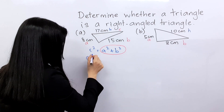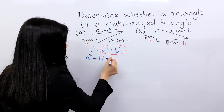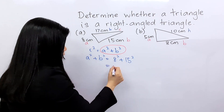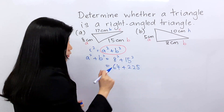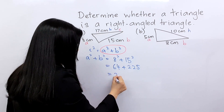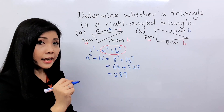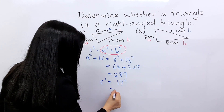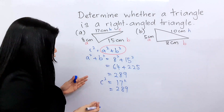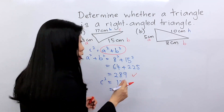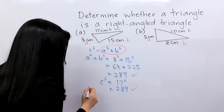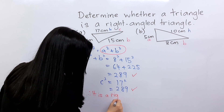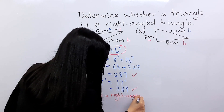So 64 plus 225 equals 289. Next, find the value of C squared. C is 17, so 17 squared equals 289. They match — 289 equals 289. So it is proven that it is a right-angled triangle.